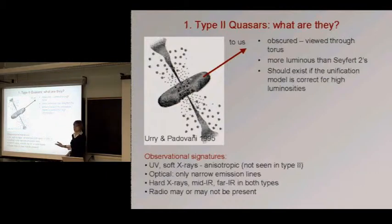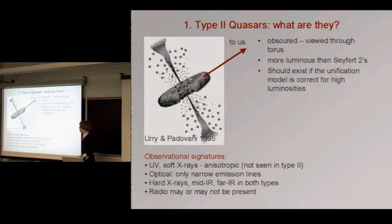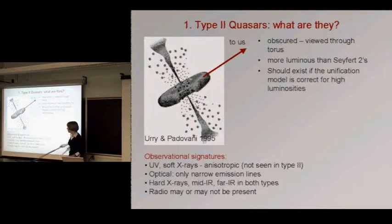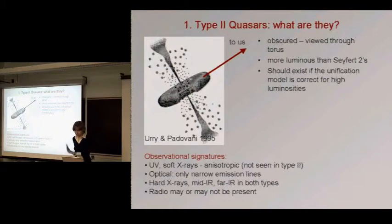This model was developed for low luminosity objects — the so-called Seyfert galaxies — which have been known for several decades in our neighborhood. Up until very recently, it was not clear whether the same picture could be applied to very luminous ordinary quasars, say things that you find at redshift of a couple during the quasar epoch. UV and soft X-rays would be very anisotropic in this picture. In the optical, in the best case, you would only see narrow emission lines. The radio emission may or may not be present, so I'm not going to talk about that much more.